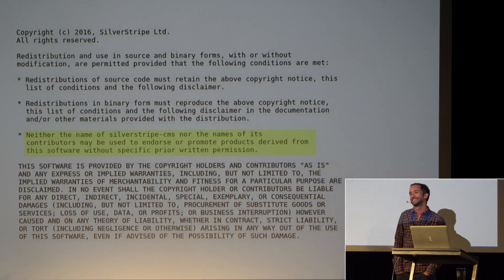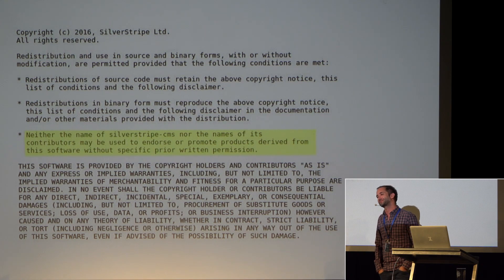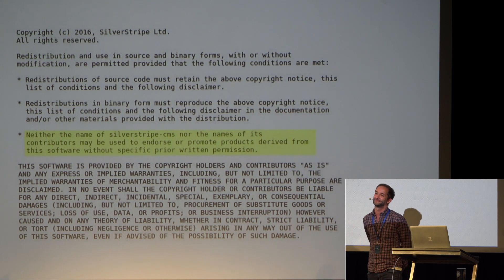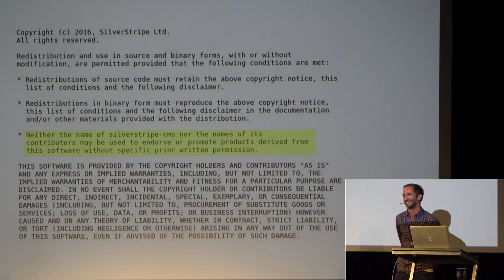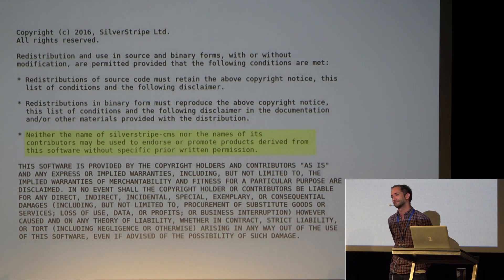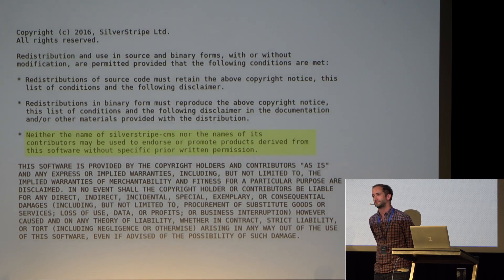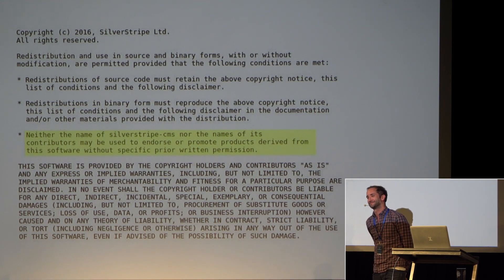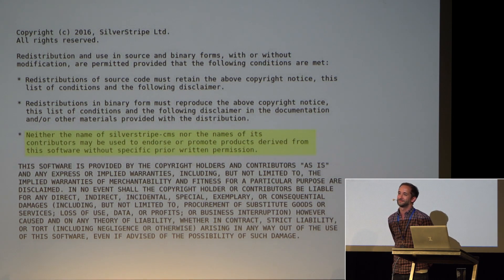The SilverStripe representative responded that his interpretation of 'endorse and promote' is more like saying 'SilverStripe recommends this product because we built it', which is different from simply acknowledging that SilverStripe was used to create it. He fully welcomes anyone saying they used SilverStripe CMS to build things. He noted there are branding guidelines on the website covering all the ways you can and can't use the names, and that document would supersede the license — 'don't do anything without prior written permission' — since the subsequent branding document essentially constitutes that prior written permission.